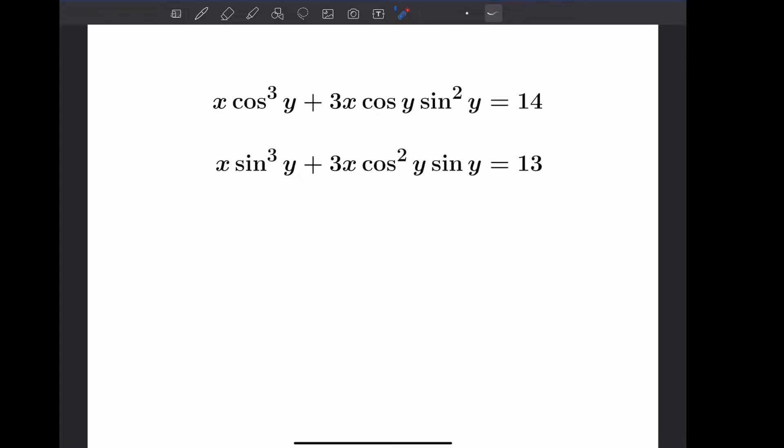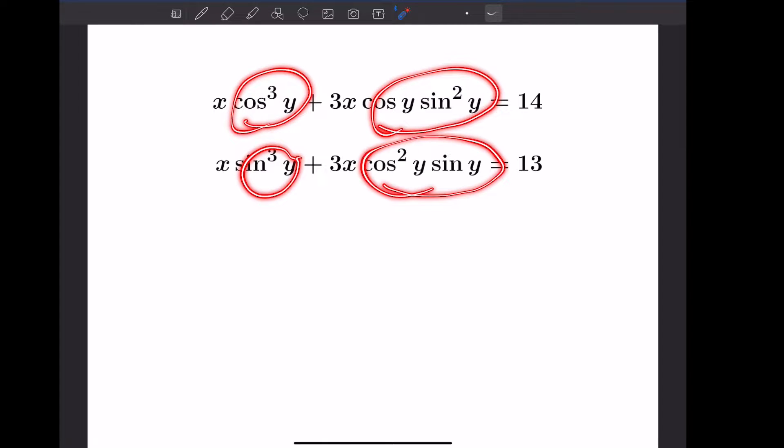So the problem asks to determine all real values of x and y that satisfy this set of equations. You notice throughout there's an x variable and then there's these powers of cosine and sine being multiplied by each other.